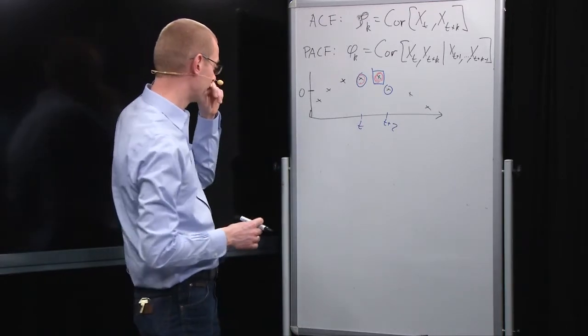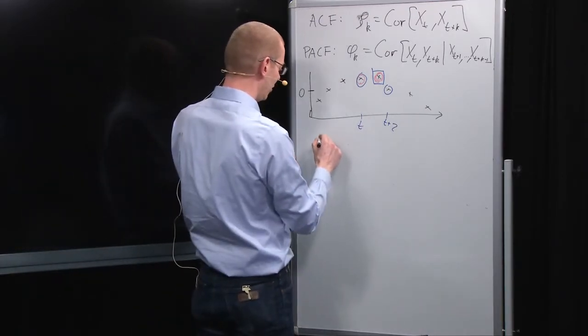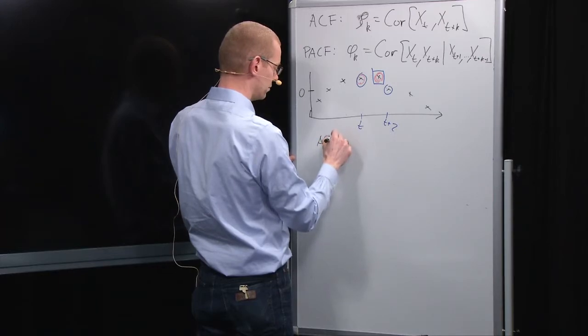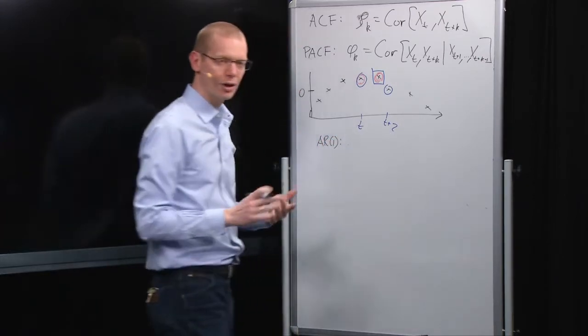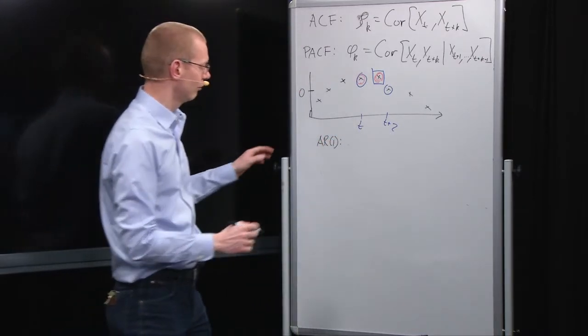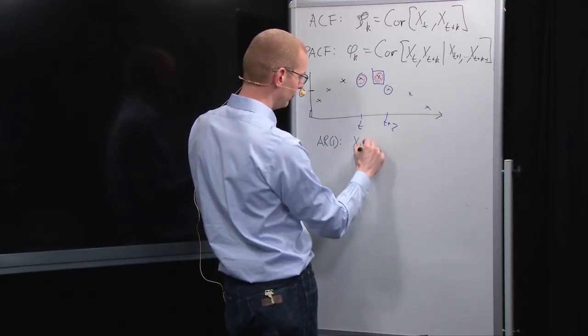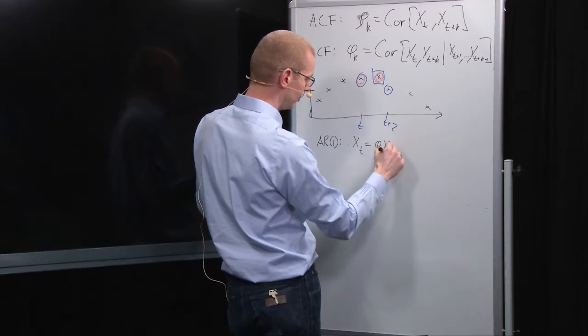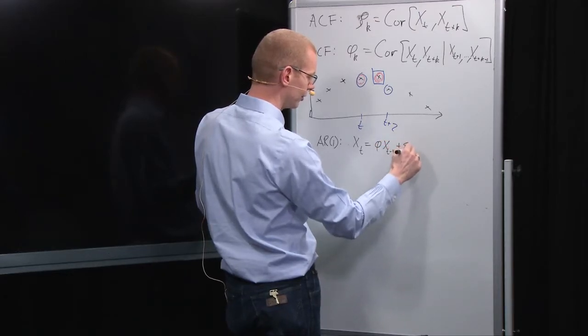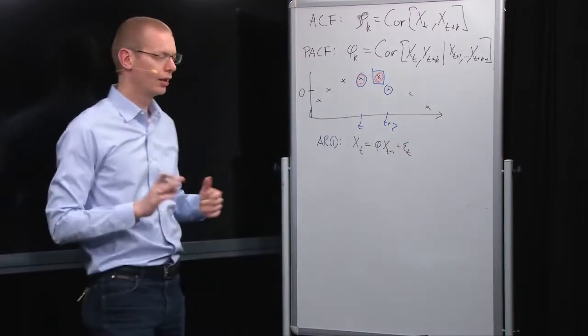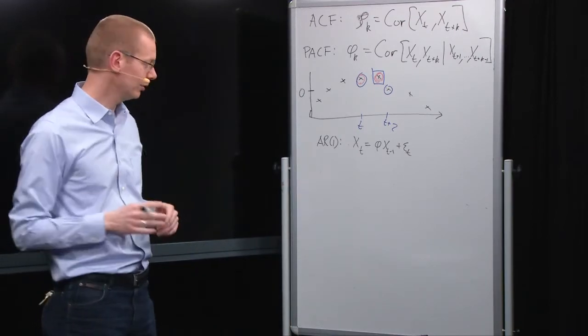So let's look at an AR1 model. What are we looking at here? Well we have a model where we have x t is equal to phi x t minus 1 plus epsilon t. So far, so good.